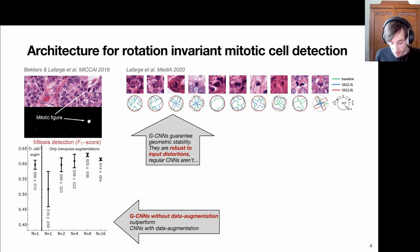But for now, we can tell that these GCNs can guarantee geometric stability - well, up to these numerical artifacts. That means they are robust to input distortions and regular CNNs aren't.